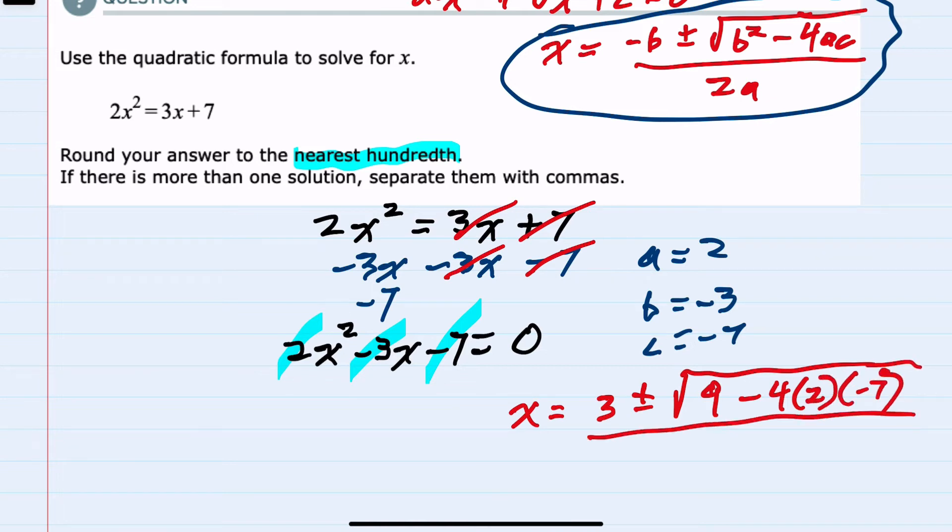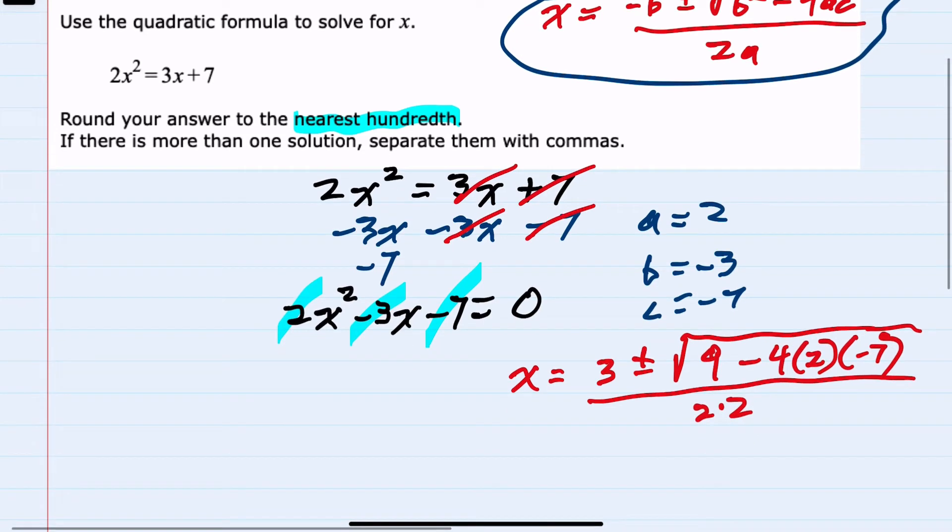over 2 times a, or 2 times 2. From here we can start to simplify.